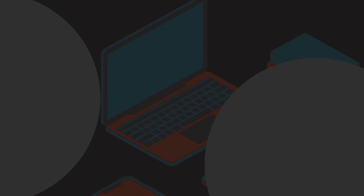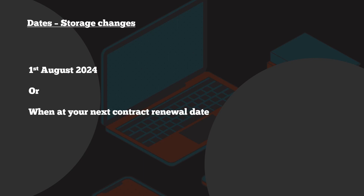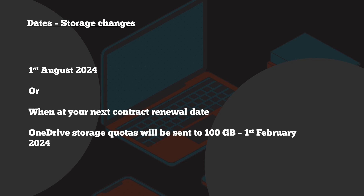So when do these storage changes come into effect? Microsoft have given us some important dates. The pooled storage allocation will happen as of the 1st of August 2024, unless you have a contract renewal date before then. Another important date: OneDrive quota limits for all users will be moved to 100GB on the 1st of February 2024. Understand that quota and where you are — you will be able to reduce student mailbox sizes or OneDrive storage allocations to help manage things further.